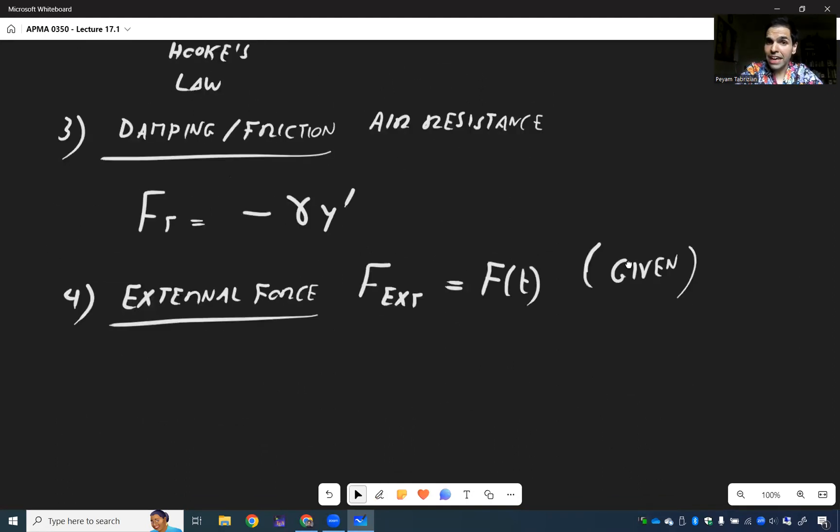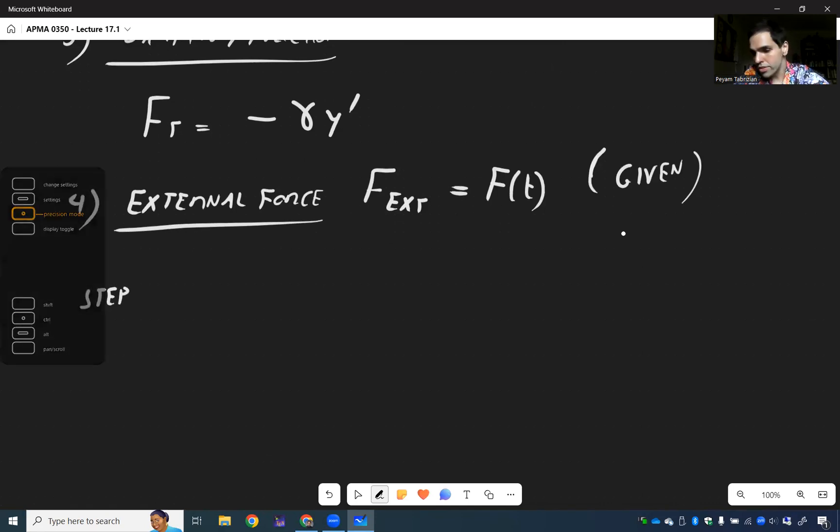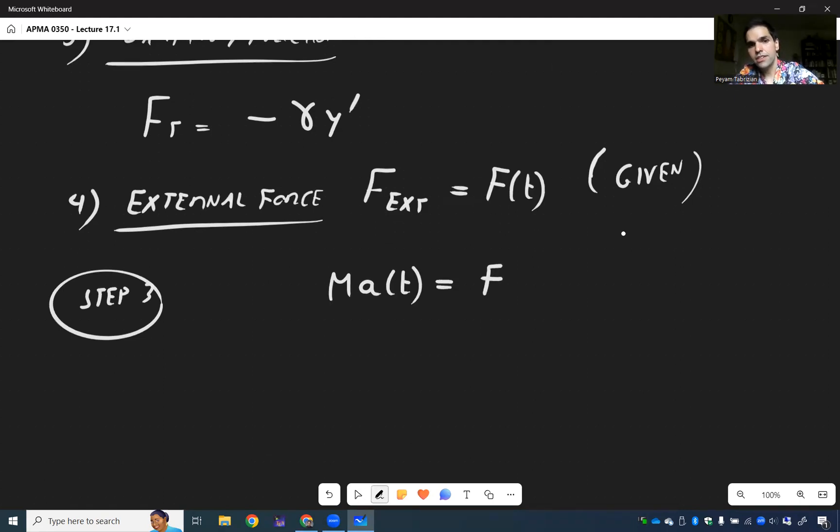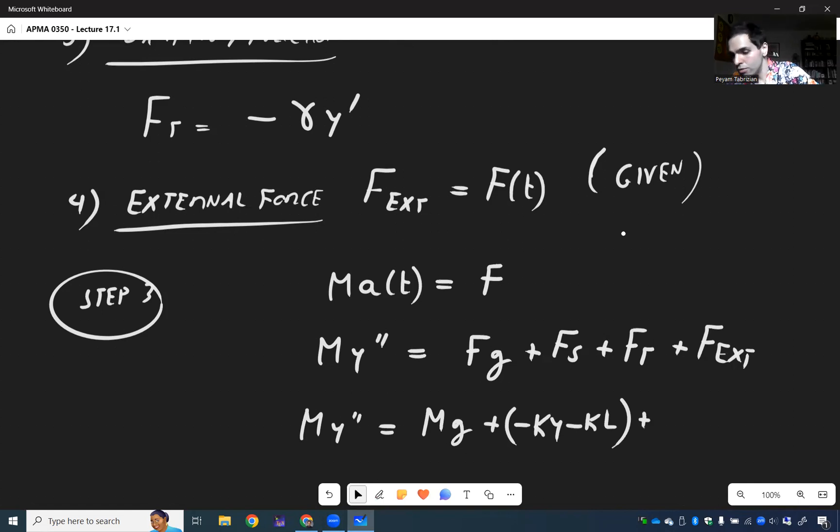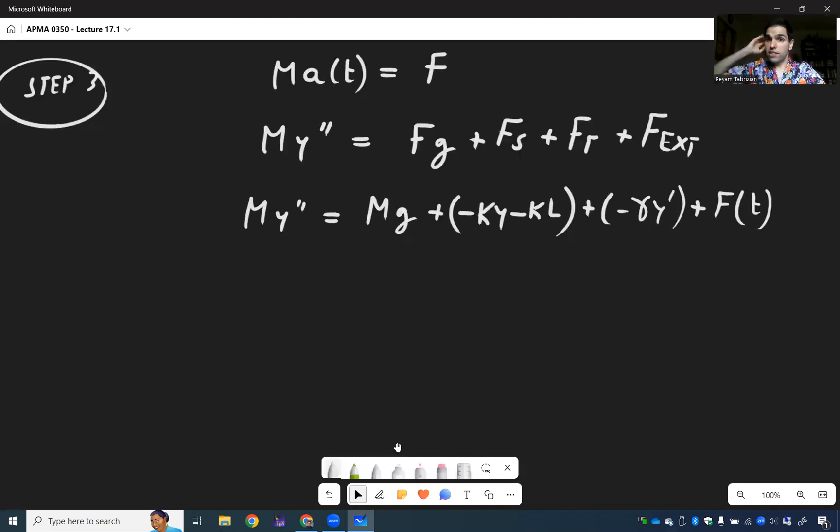All right, now let's put everything together and see what we get. So step three. So what do we have? Force is mass times acceleration. So f is ma. And again, we saw a was my double prime. The force is the sum of all those things: gravity, spring, air resistance, and external force. So my double prime, again, it was mg, and then plus, remember we had this minus ky minus kl, and air resistance was minus gamma y prime and an f of t. Now, as complicated as this looks, it actually simplifies a little bit.